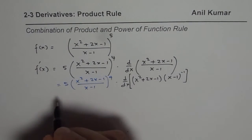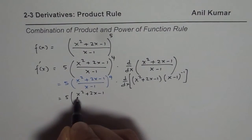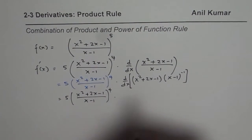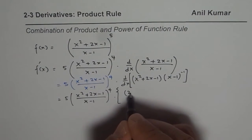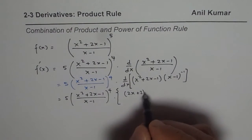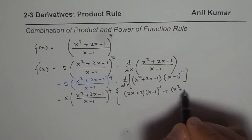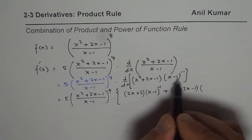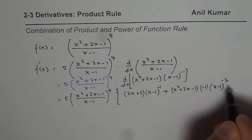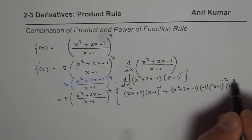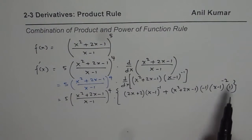So continuing, we have the first part: 5 times (x squared plus 2x minus 1 divided by x minus 1) to the power of 4. Now applying the product rule: derivative of the first part, which is 2x plus 2, times the second part x minus 1 to the power of minus 1, plus the first function x squared plus 2x minus 1 times the derivative of the second function, which is minus 1 times x minus 1 to the power of minus 2 times 1.